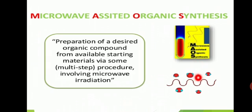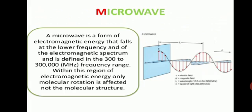Dielectric heating mainly depends on the ability of the solvent or reagent to absorb microwave energy. Microwave adjusted organic synthesis involves the preparation of a desired organic compound from available starting materials using a multi-step procedure involving microwave radiation, combined with a synthesis strategy. A microwave is a form of electromagnetic energy that falls at the lower frequency of the electromagnetic spectrum, defined in the 300 to 300,000 megahertz frequency range. Only molecular rotation is affected, not the molecular structure. Unlike ultraviolet waves, microwaves are unable to break or make chemical bonds directly; their energy can only affect the rotation of molecules.